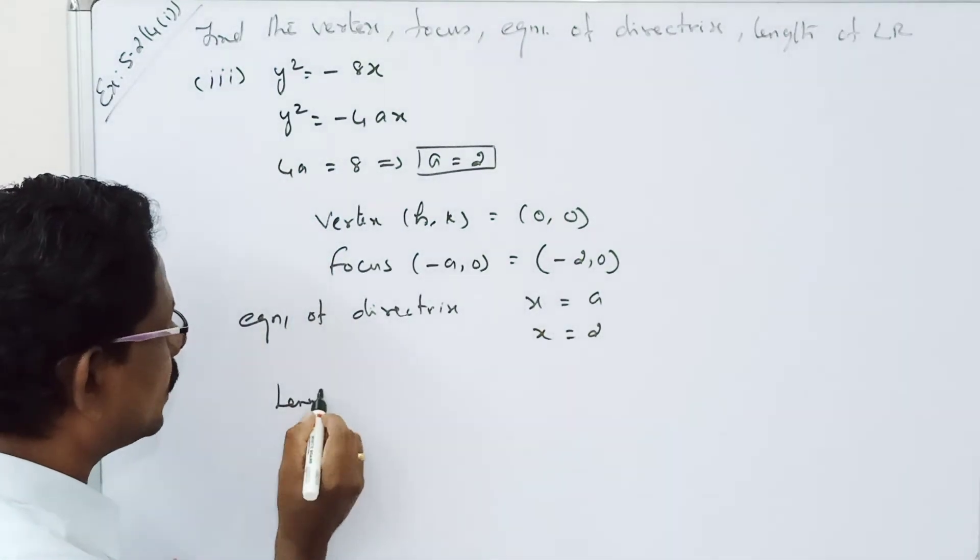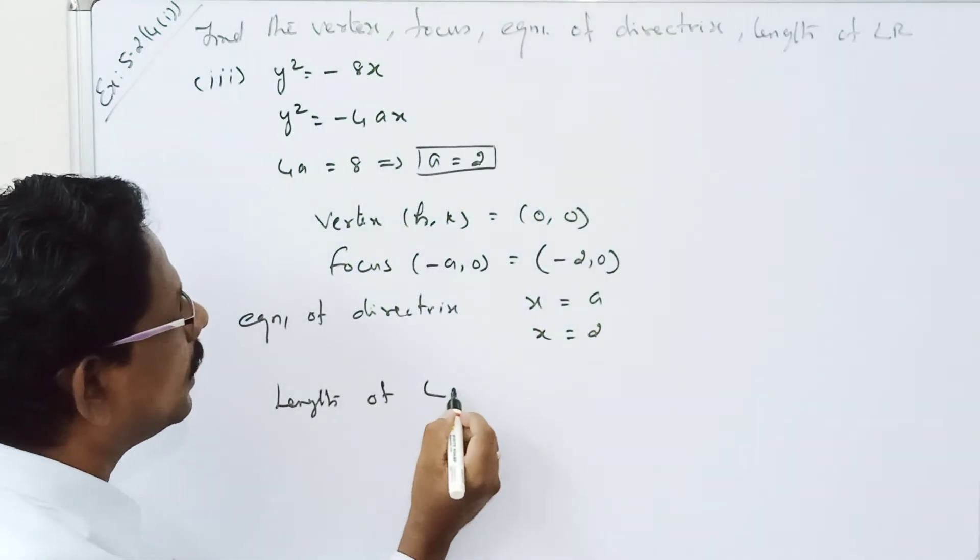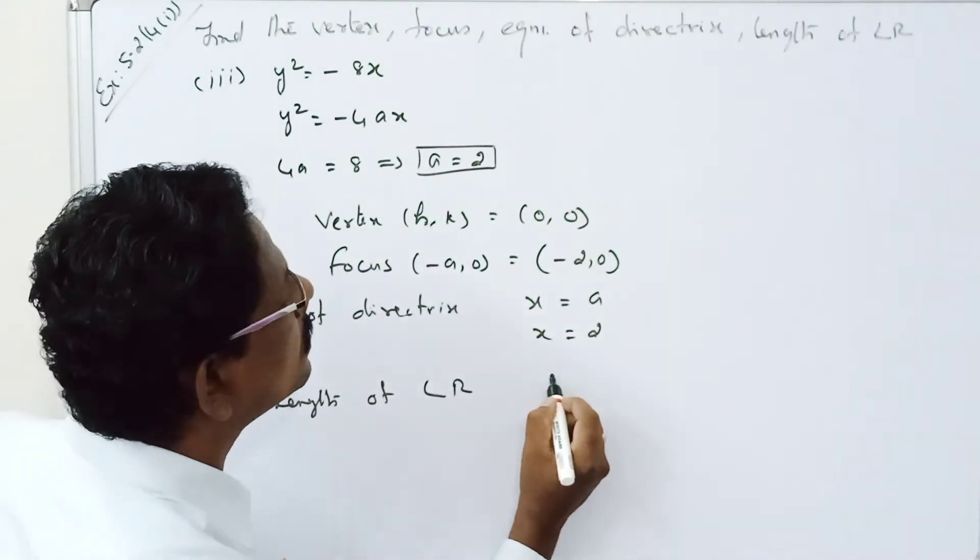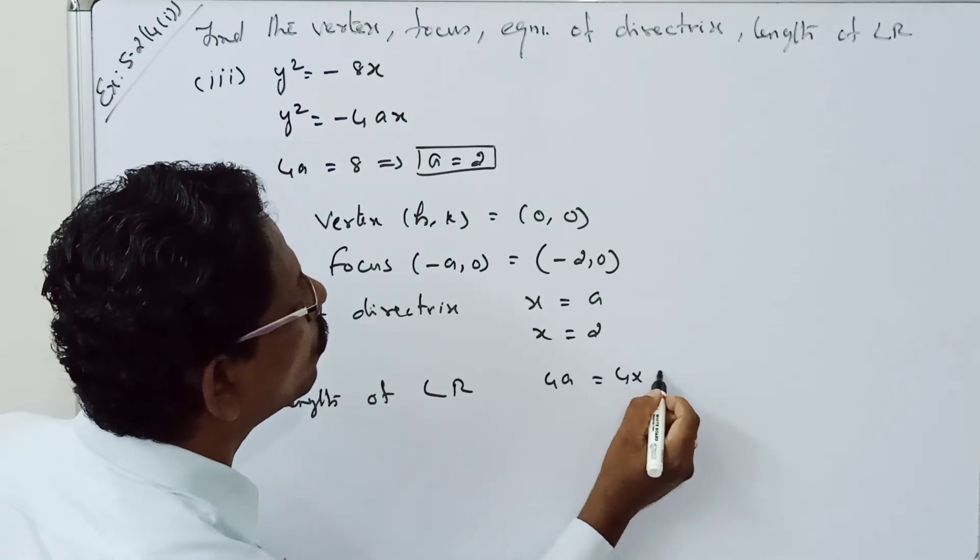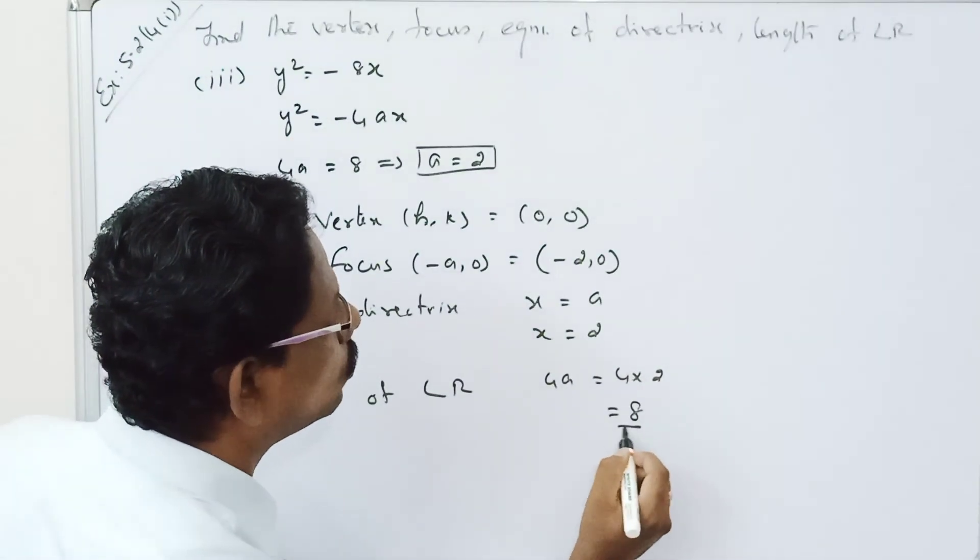Then, length of the latus rectum. That is 4a equal to 4 times 2 equal to 8.